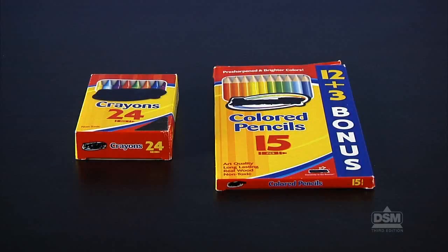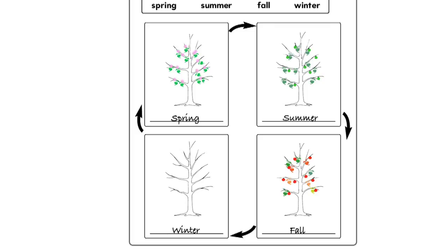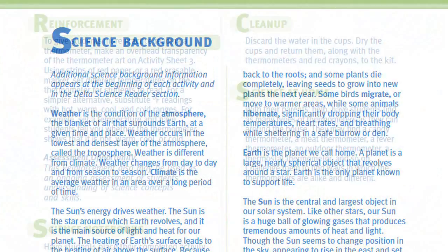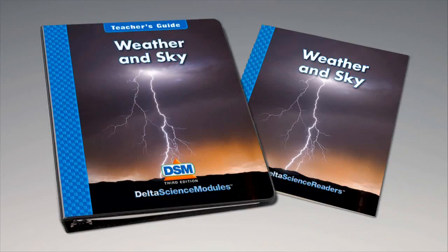Finally, distribute one copy of Activity Sheet 8 and a box of crayons or colored pencils to each student. Point out the bare tree in each box and explain that the tree in the picture is an apple tree. First, write the name of a season at the bottom of each box, making sure the names are in the correct order. Then, color in the apple tree to show what it looks like in each season. Help students by displaying photos of an apple tree in four seasons if available, or show the Delta Science Reader Big Book. To conclude session two, display the class season mural and the seasons posters. For science background, reinforcement activities, curriculum connections, and information about the Delta Science Reader, please consult your DSM Teacher's Guide.